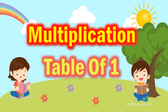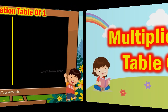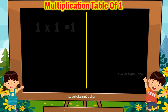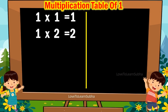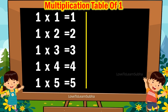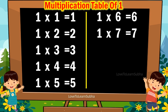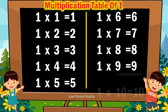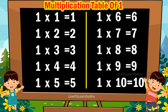Multiplication table of 1. 1 1s are 1, 1 2s are 2, 1 3s are 3, 1 4s are 4, 1 5s are 5, 1 6s are 6, 1 7s are 7, 1 8s are 8, 1 9s are 9, 1 10s are 10.